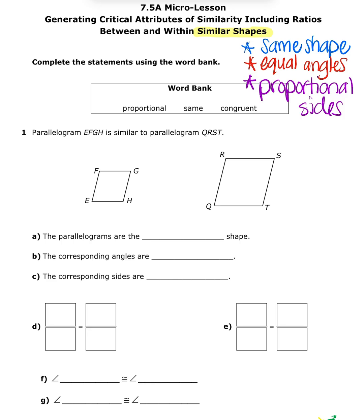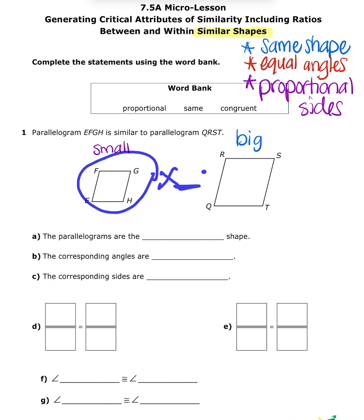Figure EFGH is similar to parallelogram QRST. We have a small figure and a big figure, and since they're similar, they have the same shape — both parallelograms — equal angles at their four corners, and proportional sides, meaning the measurements of one were multiplied by something to get the measurements of the other.